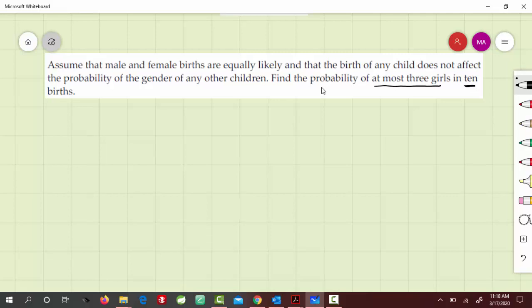In terms of binomial probability distribution, n is 10, and we have to find the probability of at most three girls.